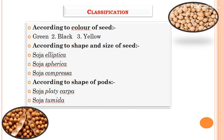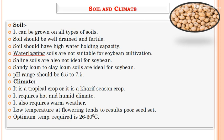Next are the soil and climate requirements for soybean. It can be grown on all types of soils, but soils should be well-drained and fertile with high water-holding capacity. Waterlogged soils are not suitable. Saline soils are also not ideal as they affect root nodulation activity. Sandy loam to clay loam soils are ideal, and the soil pH should be 6.5 to 7.5.